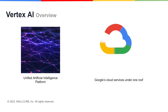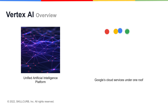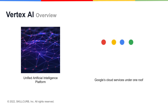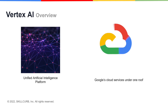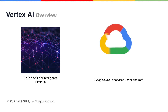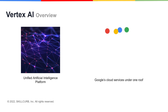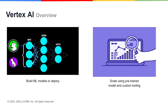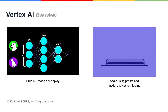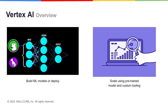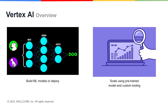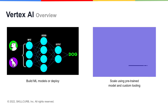Vertex AI is a unified artificial intelligence platform that offers all of Google Cloud's services under one roof. With Vertex AI, you can build machine learning models or deploy and scale them easily using pre-trained and custom tooling.